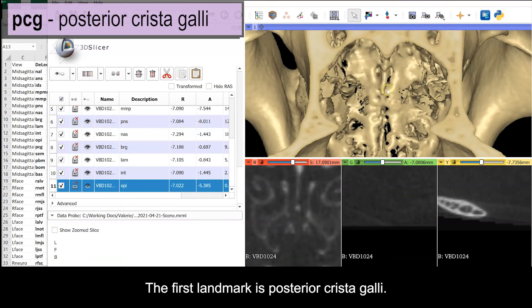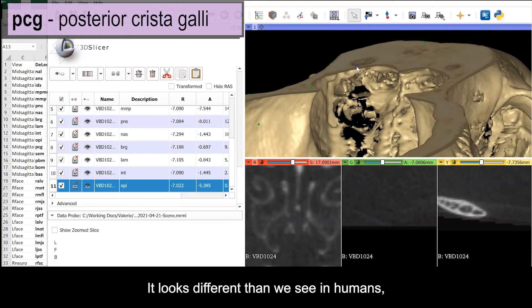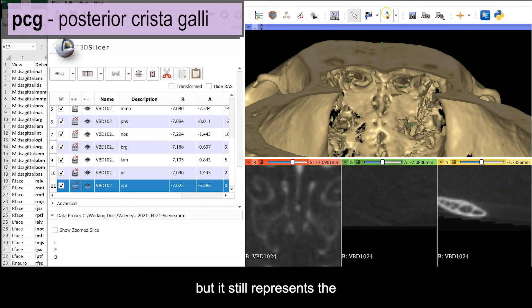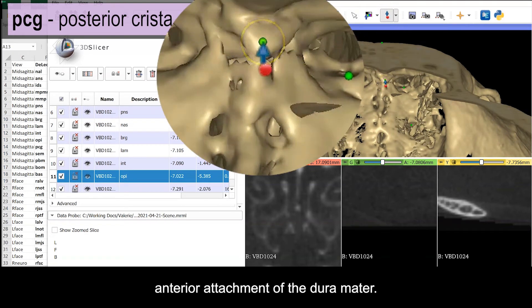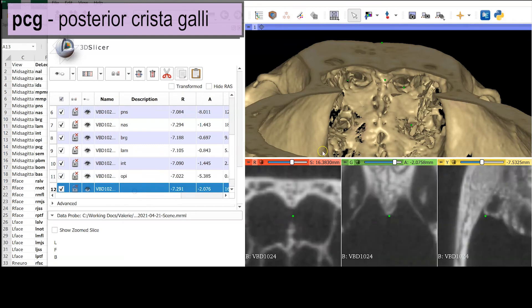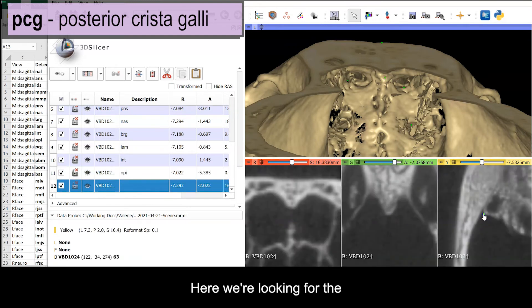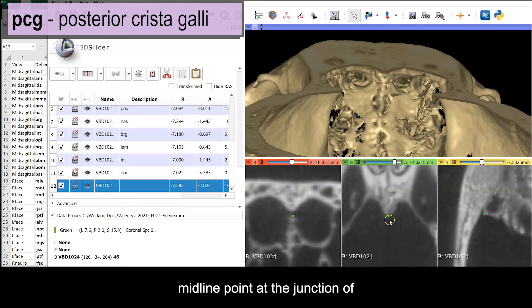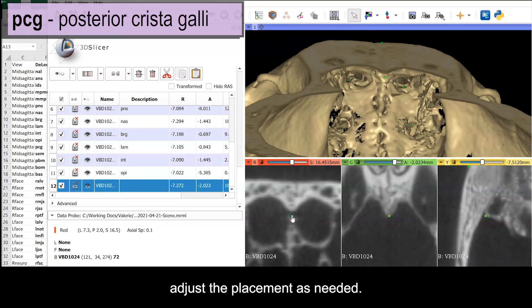The first landmark is posterior cristal galley. It looks different than we see in humans, but it still represents the attachment of the dura mater. Here we're looking for the midline point at the junction of the ethmoid and the frontal. Use your orthogonal views to adjust the placement as needed.